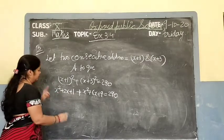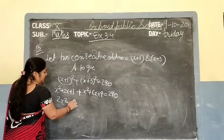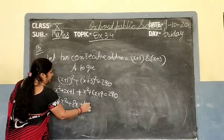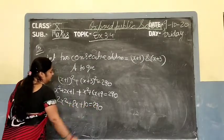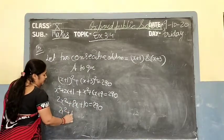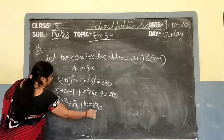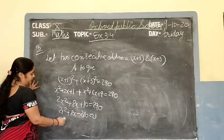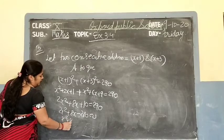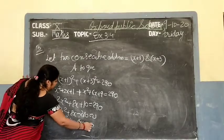Adding like terms: 2x square plus 8x plus 10 equals 290. Moving 290 to the left: 2x square plus 8x minus 280 equals 0. Divide by 2: x square plus 4x minus 140 equals 0. Now factor 140 such that the difference of factors equals 4.